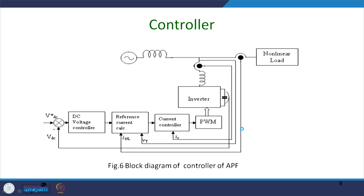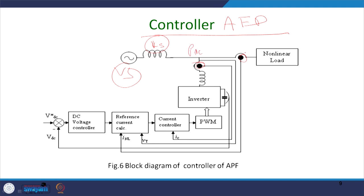This is the control block diagram of the active power filter. You have Vs here and Ls here; Rs has been neglected. You will sense the load current before the point of common coupling (PCC). This goes to the reference generation calculation, and then you sense the DC bus voltage of the shunt active power filter inverter, which you require to maintain — generally around 20 percent higher than the peak value.